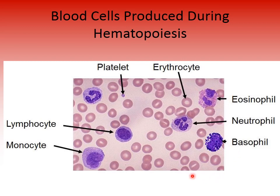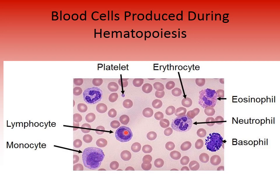A slide showing every blood cell type in one field of view illustrates erythrocytes with their characteristic clear center due to their biconcave shape, tiny platelet smudges, agranulocytes including the lymphocyte and monocyte, and the three granulocytes — basophil, neutrophil, and eosinophil. In practice, it is very rare to see every single cell type within one field of view.